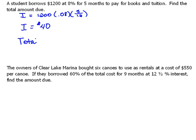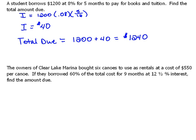Now the total due — we would have to start with that $1,200 we're borrowing, which we're going to have to pay back, plus the interest. So when we're said and done, that student will have to pay back $1,240.